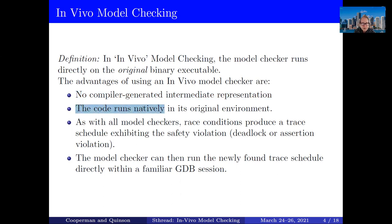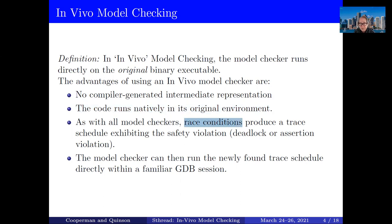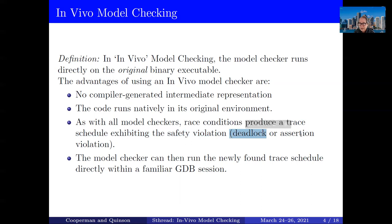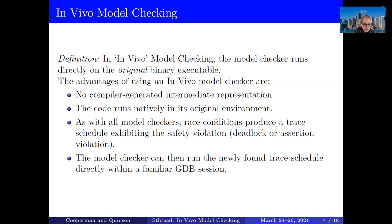There's nothing to model. The advantages of this approach are that there's no compiler-generated intermediate representation — the code is running natively in the original environment. As expected with all model checkers, if there are race conditions, they will produce a trace schedule that exhibits the safety violation. A safety violation might be deadlock or an assertion violation. The model checker can then run this newly found trace schedule directly within a familiar GDB session, using the same binary both for running standalone and for model checking — so therefore it is in vivo.